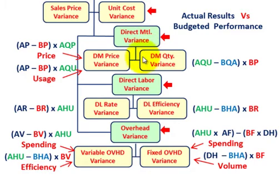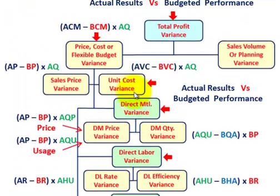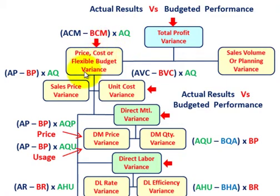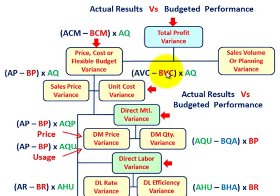So we went through our direct materials, direct labor, and overhead variances as a summary. Looking at the overall price-cost flexible budget variance, that would be the actual contribution margin per unit compared to the budget contribution margin per unit times actual quantity for the period. That's broken down between our sales price variance — actual price less budgeted price times actual quantity — and our unit cost variance — actual variable cost less budgeted variable cost times actual quantity. We were specifically looking at direct materials, direct labor, and overhead to see how they fit into our overall variance analysis.